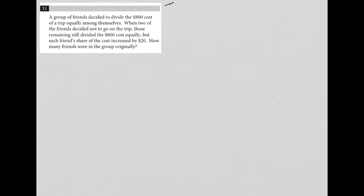This question looks like a translate word problem question, just given the length of the question itself. Let's read it and see what quantitative information I can pull out of it. The question says a group of friends decided to divide the $800 cost of a trip equally among themselves. So we know we have $800, and we're dividing this equally among some number of friends, which I'll call X.